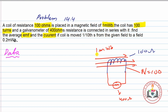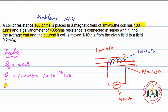Data لکھ لیتے ہیں۔ Coil کی resistance R1 = 100 ohms۔ Magnetic flux Φ1 = 1 milliweber = 1 × 10⁻³ weber۔ Number of turns N = 100۔ Galvanometer کی resistance R2 = 400 ohms۔